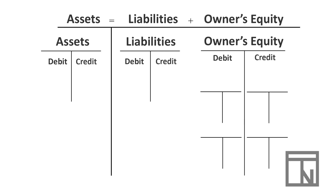Let's start with assets. Assets are on the left side of the accounting equation, so the left side increases assets. Debits would be the increase to an asset, and that would make credits the decrease to the asset, because the opposite number always decreases a category. The increasing side is sometimes called a normal balance because most accounts normally have a positive or increasing balance. So assets would have a debit normal balance because debit is the increasing side.